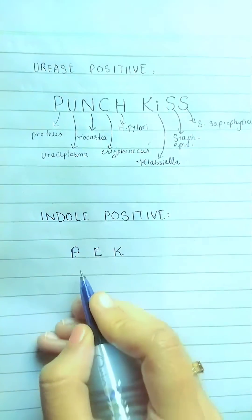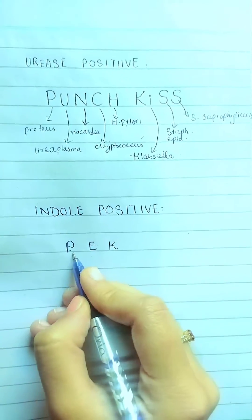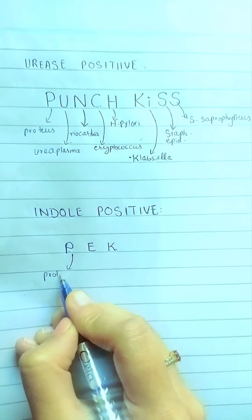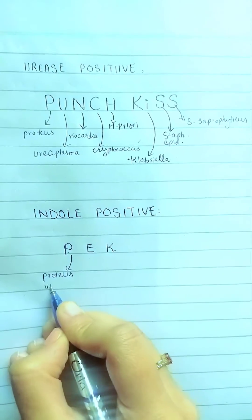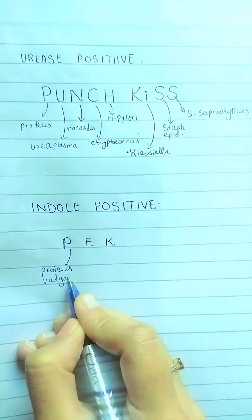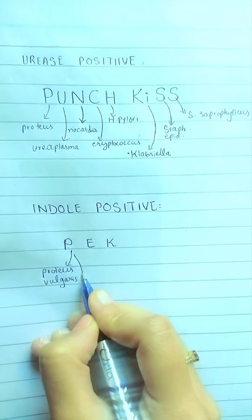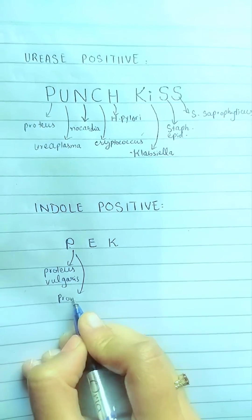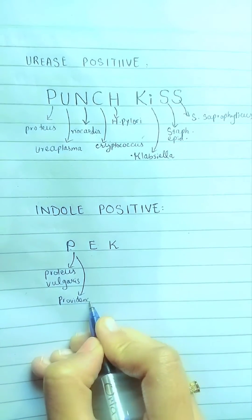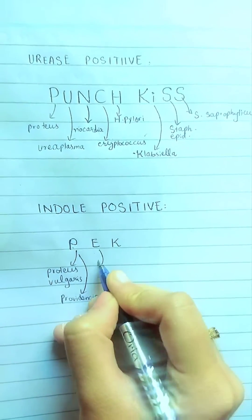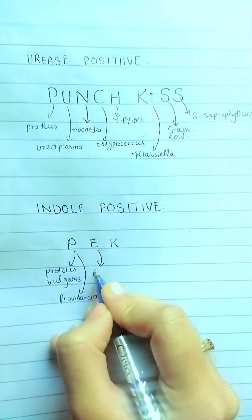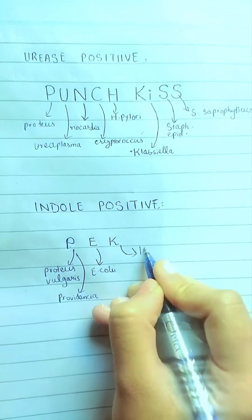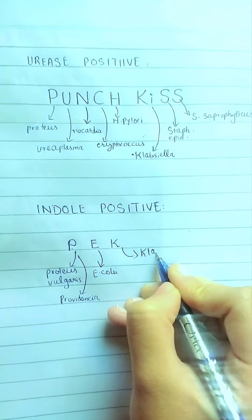Now coming on to indole positive organisms: P is for Proteus vulgaris and P is for Providencia, E is for E. coli, and K is for Klebsiella oxytocum.